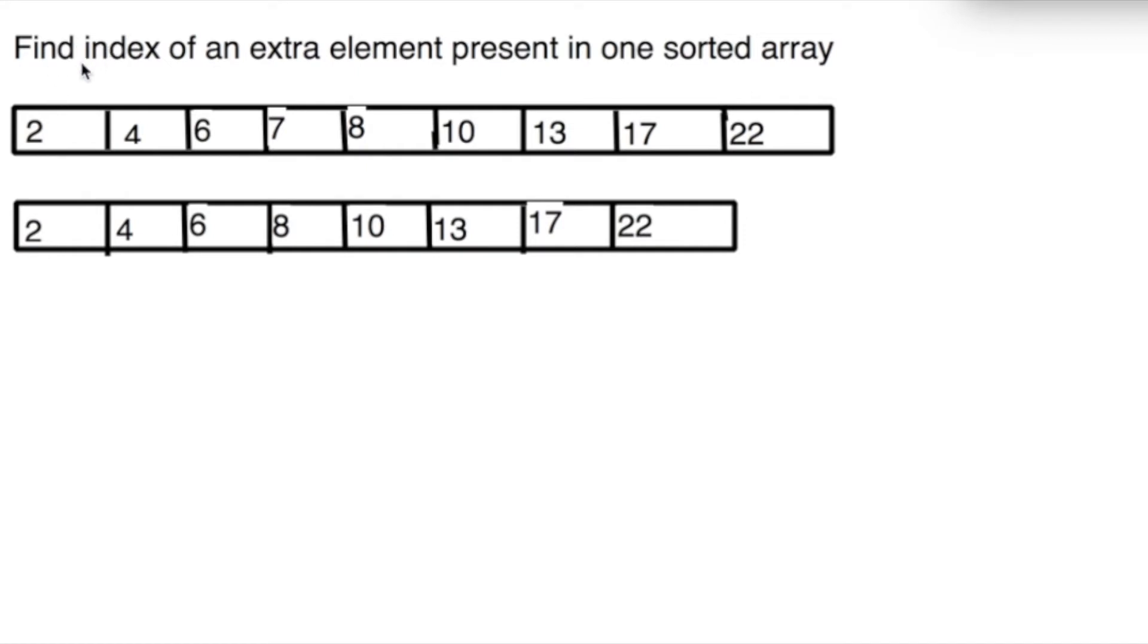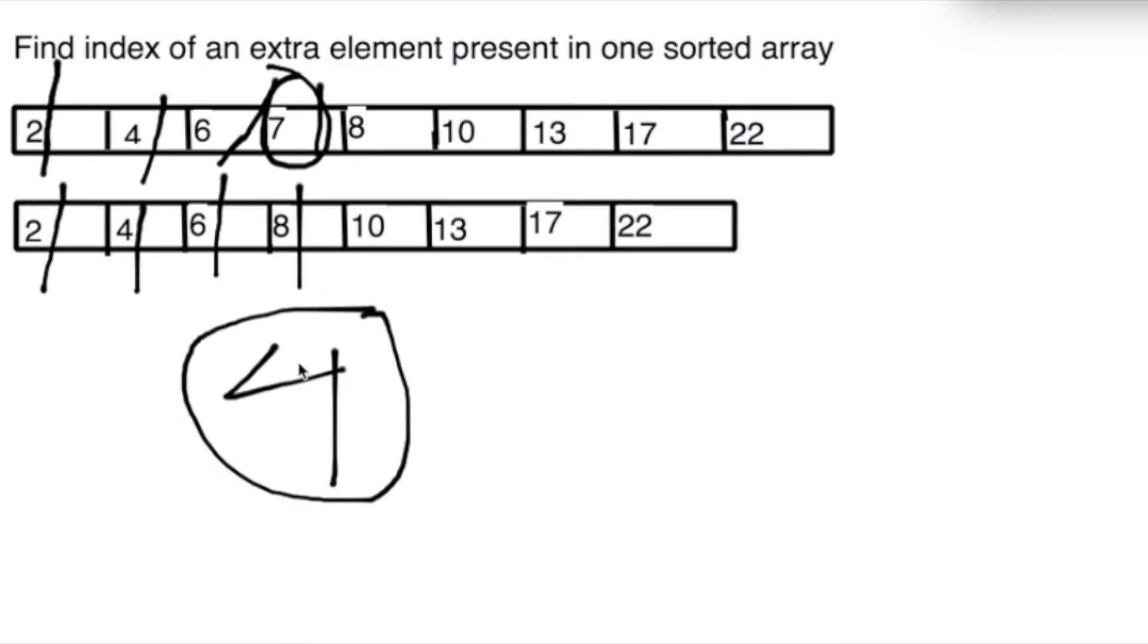For example, let's go: 2 and 2, 4 and 4, 6 and 6, 7 and 8. So here is the mismatch, so we know this is the index, the fourth element. So the fourth element is the one where the extra is present.